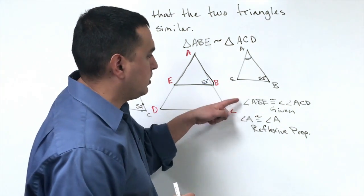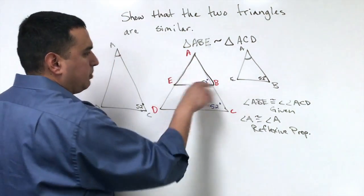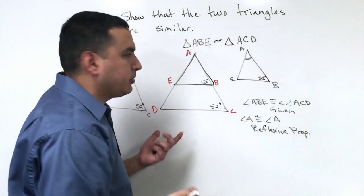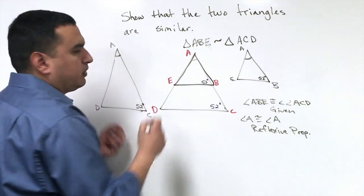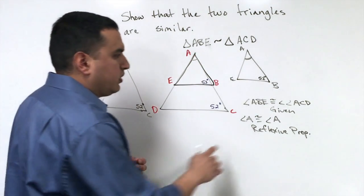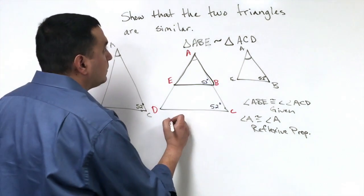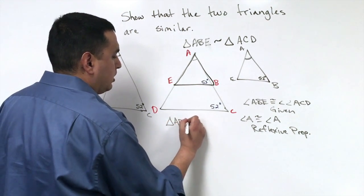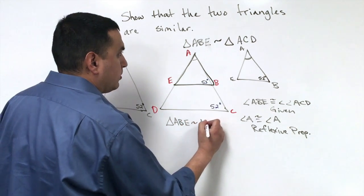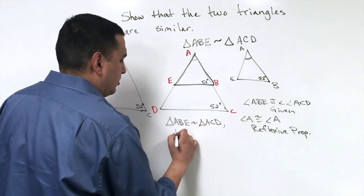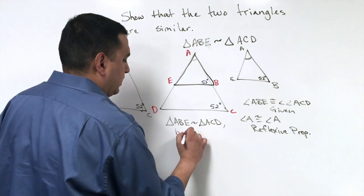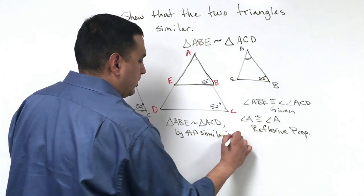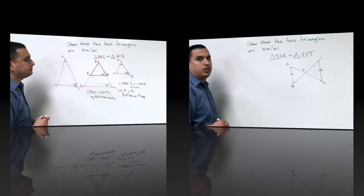So, here's my two congruencies. I know angle ABE is congruent to angle ACD because I was given that. And then angle A is always going to be congruent to itself, angle A. So, we would say triangle ABE is similar to triangle ACD by AA similarity.